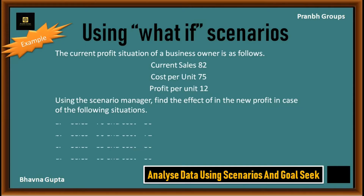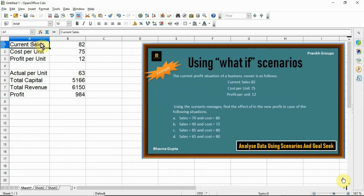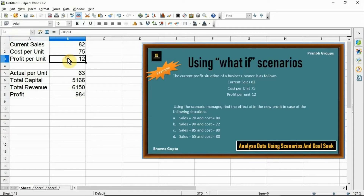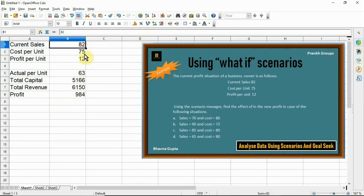Use the given data: current sale = 82, cost per unit = 75, profit per unit = 12. Find actual cost per unit: 75 minus 12 = 63. Then find the total capital: 82 × 63, total revenue: 82 × 75 = 6150, and then find profit: total revenue minus total capital.